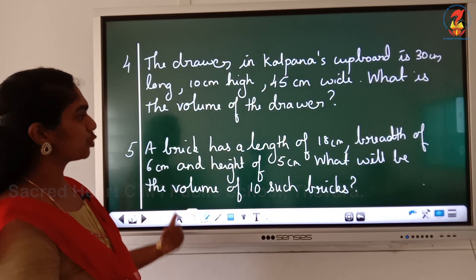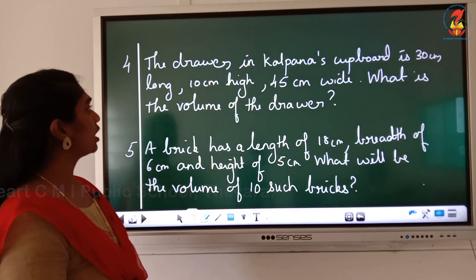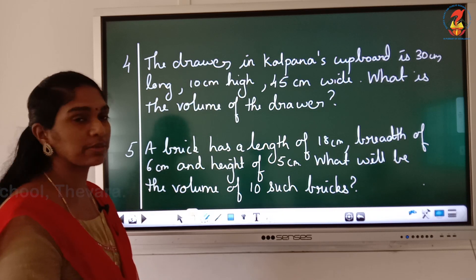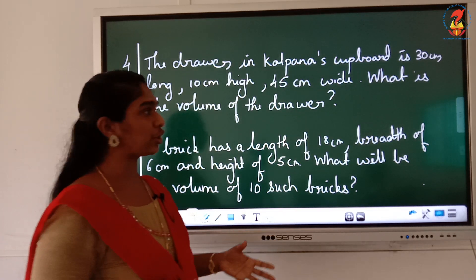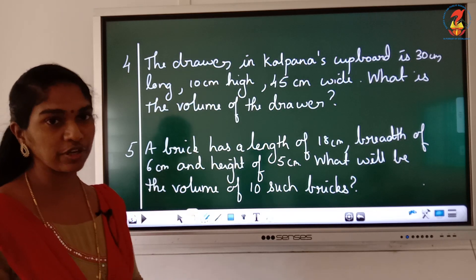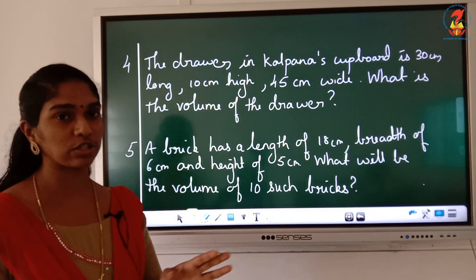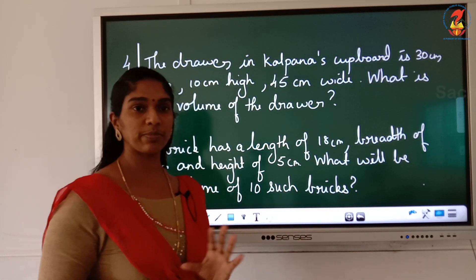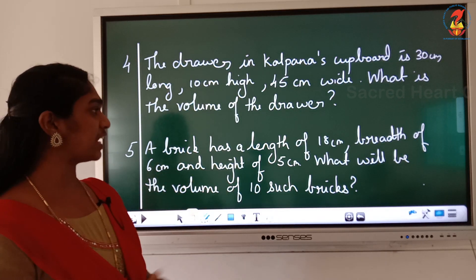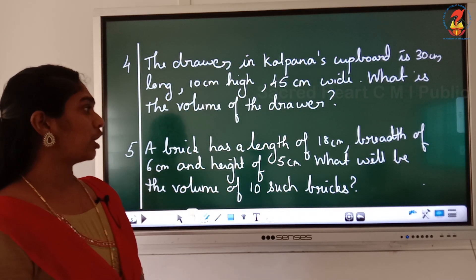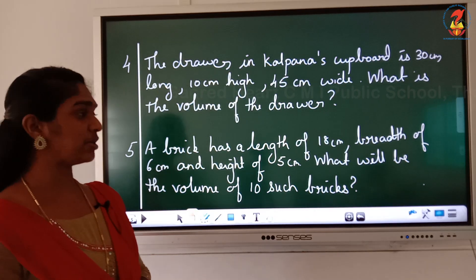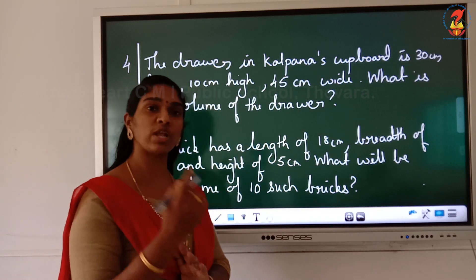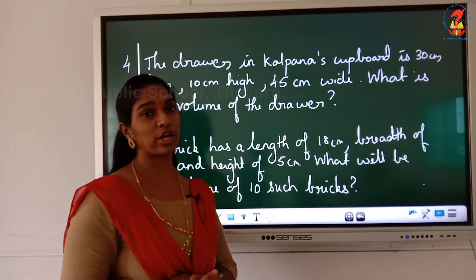Two questions are there for homework. First: the drawer in Kalpana's cupboard is 30 centimeter long, 10 centimeter high, and 45 centimeter wide. Write volume of the drawer = length into breadth into height, apply the values, and calculate. Second: a brick has a length of 18 centimeter, breadth of 6 centimeter, and height of 5 centimeter. Find the volume of 10 such bricks — find volume of 1 brick and then multiply by 10.